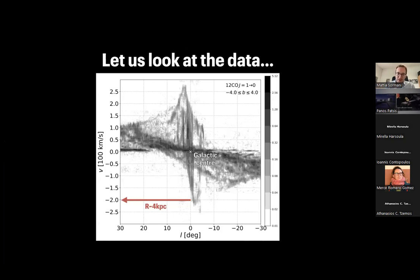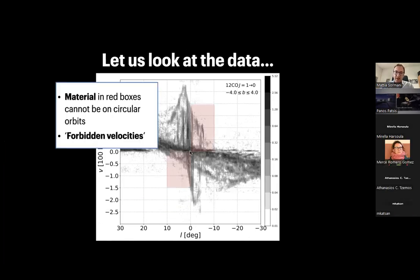Here is a zoom into the central part, the innermost 30 degrees corresponding roughly to four kiloparsecs from the center. The most obvious evidence that there are no circular motions in the galactic center is emission coming from the two red boxes — these are called forbidden velocities, meaning forbidden to purely circular motion. Anything on a circular orbit cannot produce emission in these boxes, but because emission exists there, we know there are no circular motions in the galactic center.